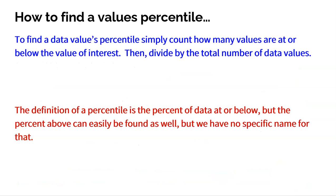How do you find a percentile? Pretty easy if you understand the definition. To find a data value's percentile, simply count how many values are at or below the value of interest, then divide by the total number of data values. That's how you find a percentile — it's simply the proportion of values that are at or below the value you're interested in. The definition of a percentile is the percent of data at or below. Don't forget that.